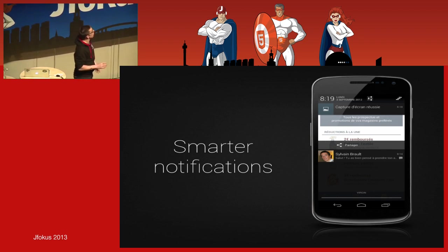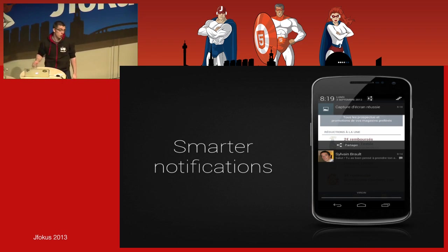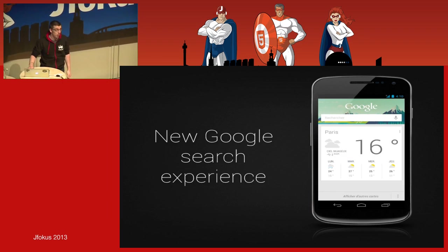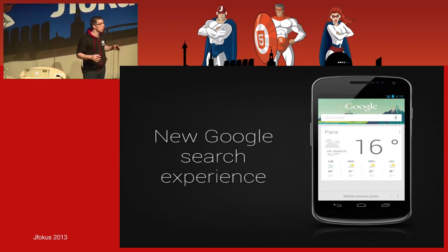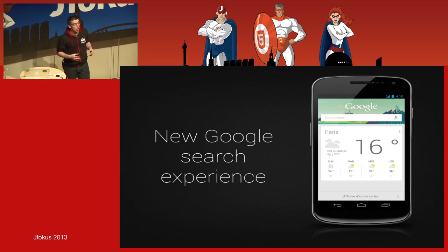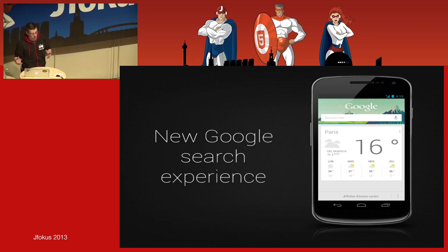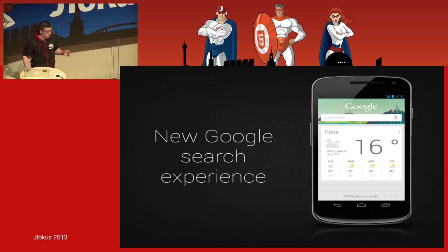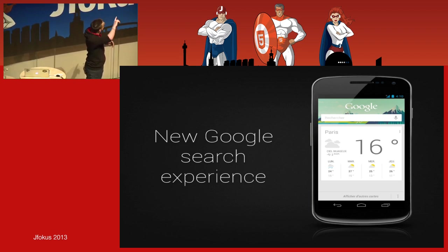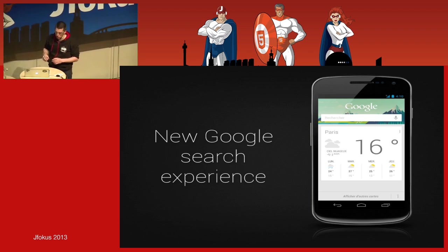One of the biggest improvements from a user point of view was a completely redefined search experience with the introduction of Google Now. Google Now is basically a tool that predicts everything for you — it will tell you what you have to do today, when to take your car to get home at the right time, and so on. You can launch Google Now by touching the bottom system bar and swiping to the top.